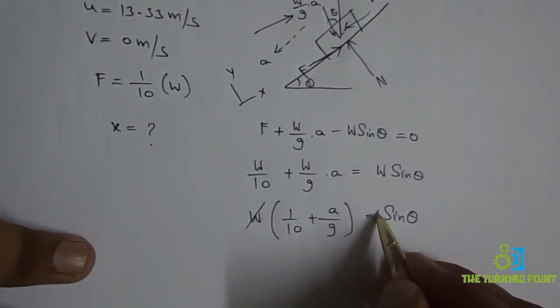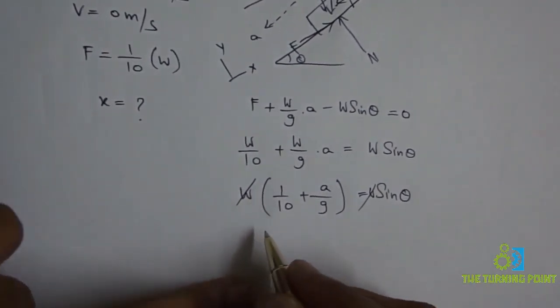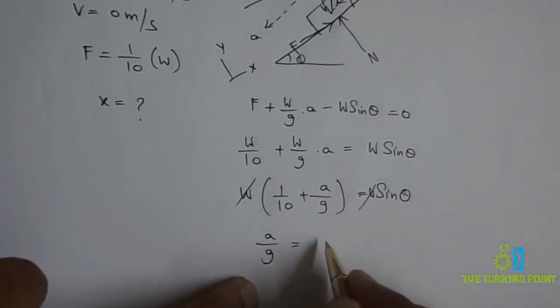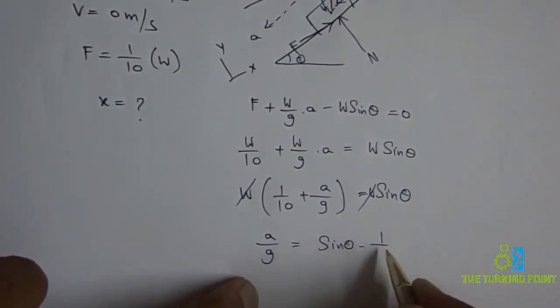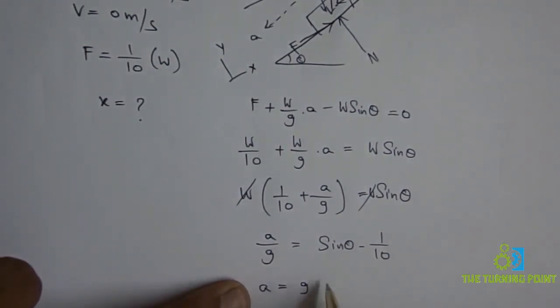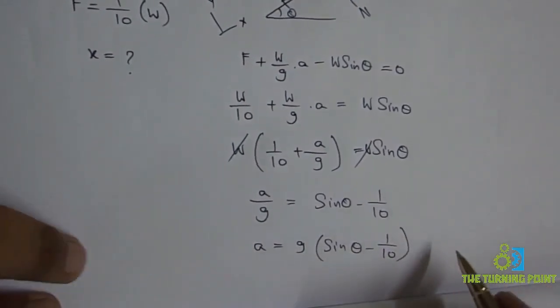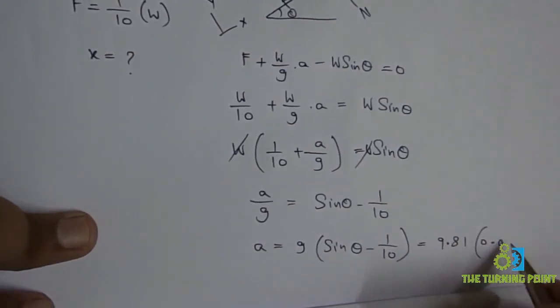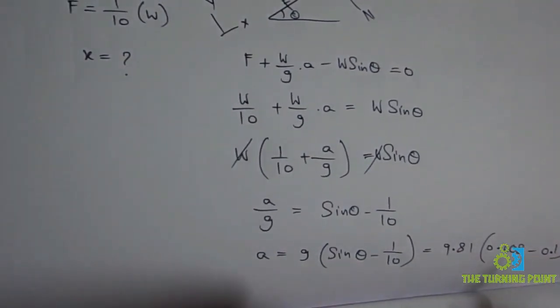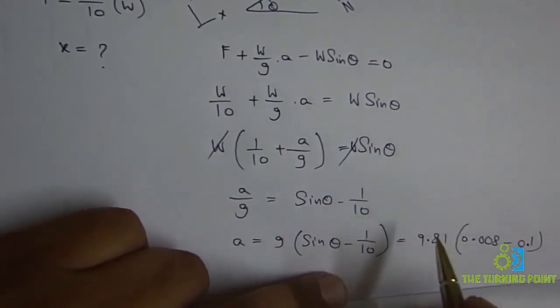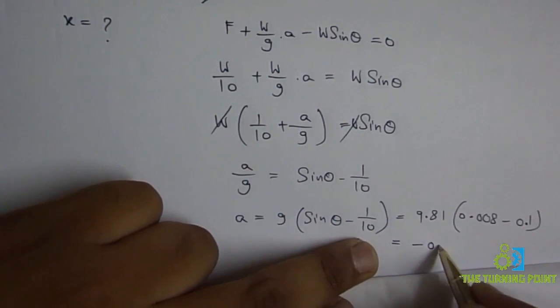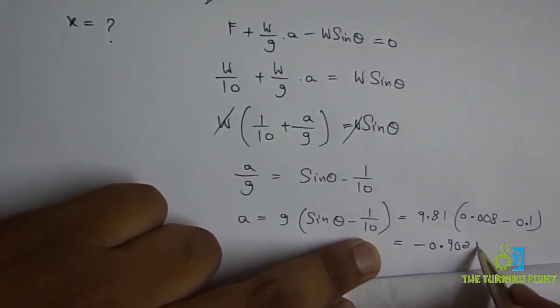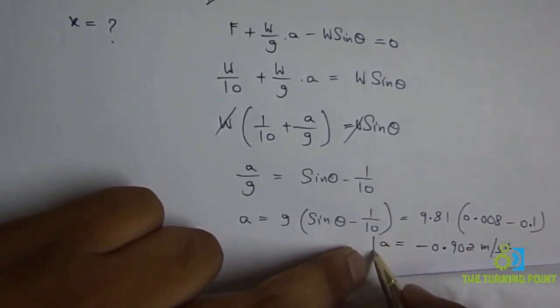W gets cancelled. From that, A/G = sin theta - 1/10. A = G(sin theta - 1/10). Here G = 9.81 and sin theta is 0.008, minus 1/10 is 0.1. When you solve this, you will get the acceleration value as -0.902 m/s².